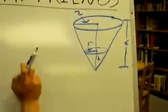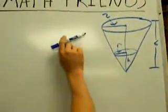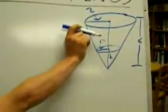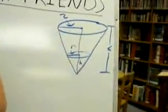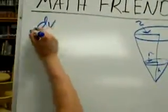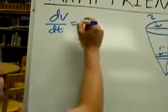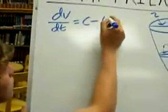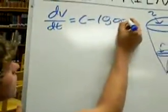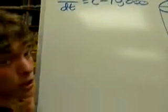Now if C is the rate in which the water is being pumped in, then we can say that the rate that it is leaking out, which is dV/dt, change of volume over time, is equal to C minus 10,000 centimeters cubed per minute.